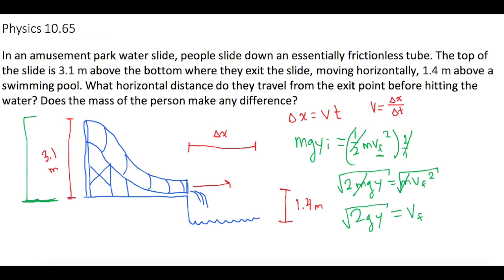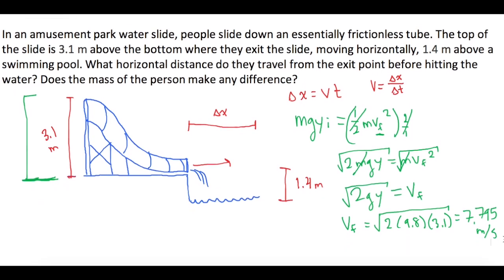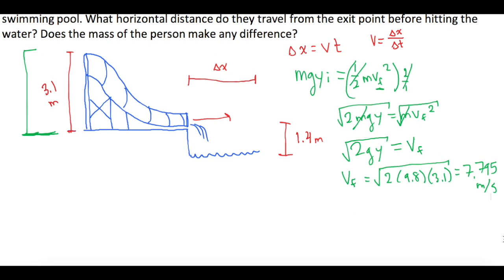Okay, so now let's figure out how fast they're going. So v-final is equal to the square root of 2 times 9.8 times 3.1 or delta y, and that gives us 7.795 meters per second. So now we have half of what we need.